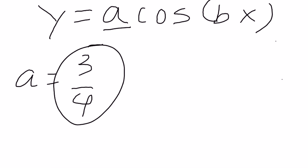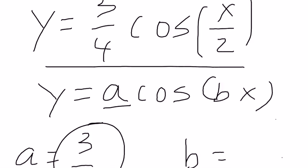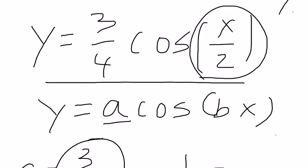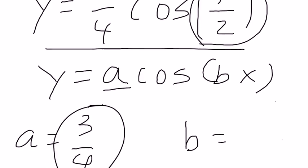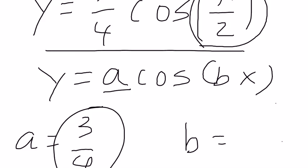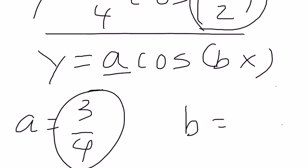Our B value is going to equal, well what would we multiply x by to get x over 2? B must equal 1 half. Because 1 half times x is x over 2.